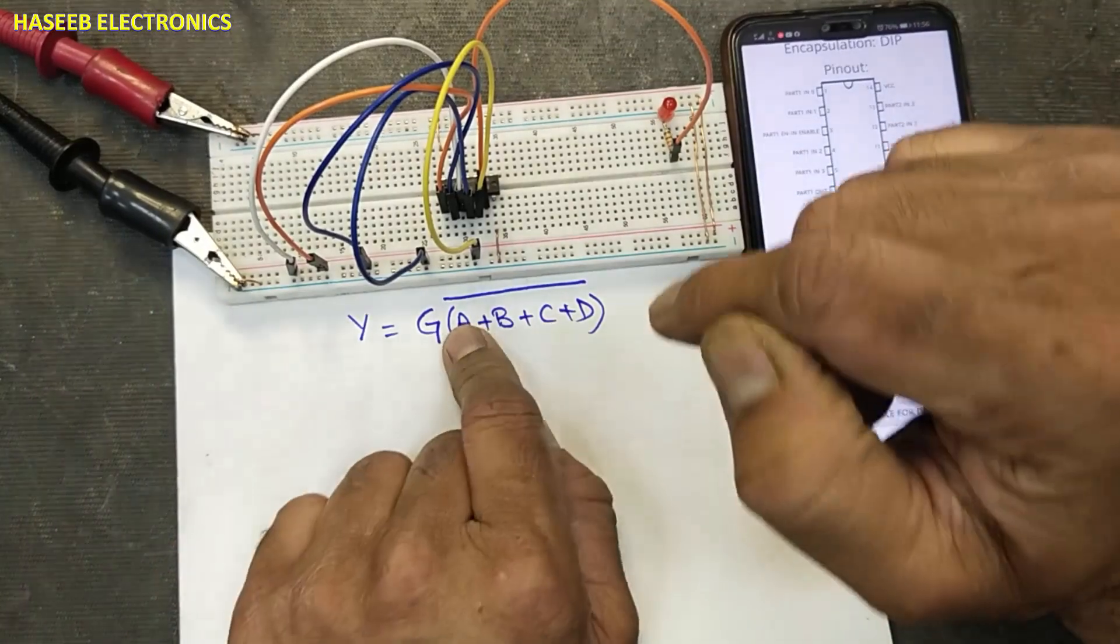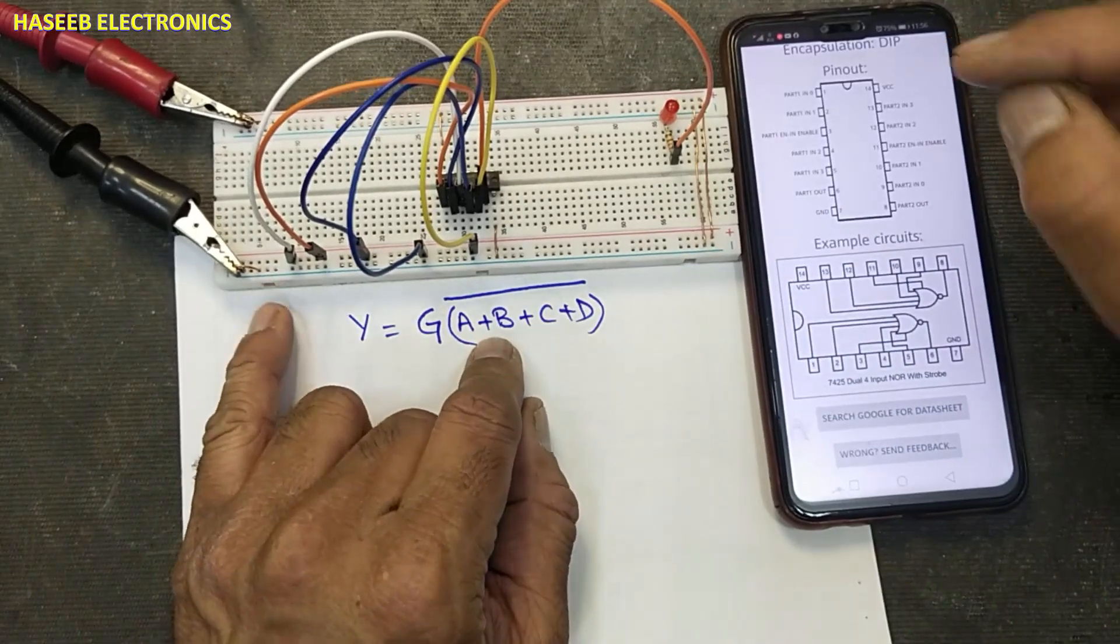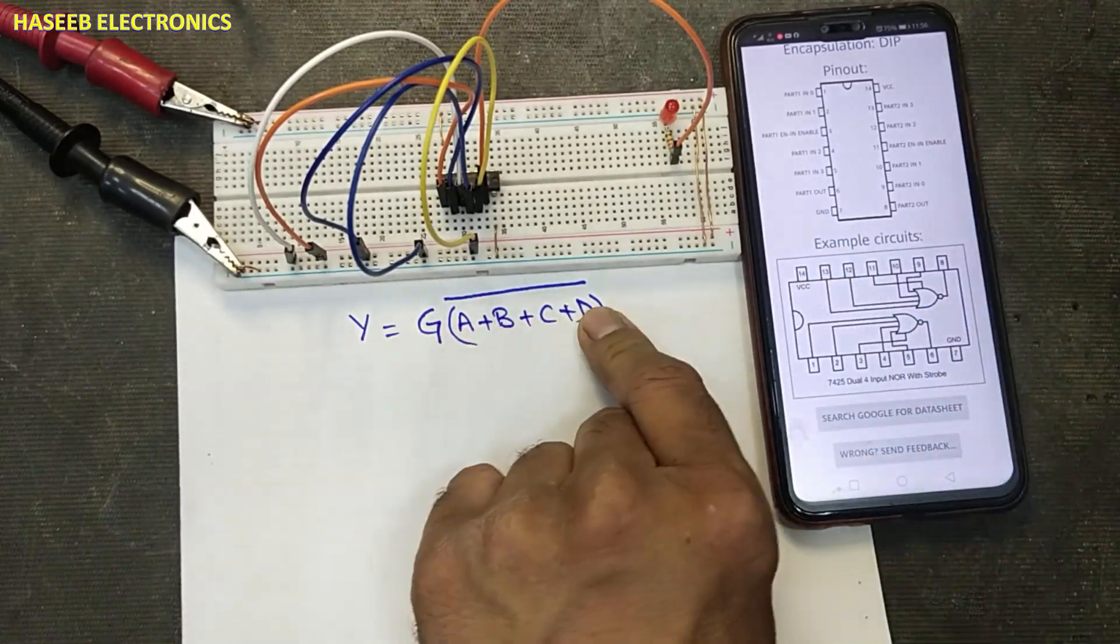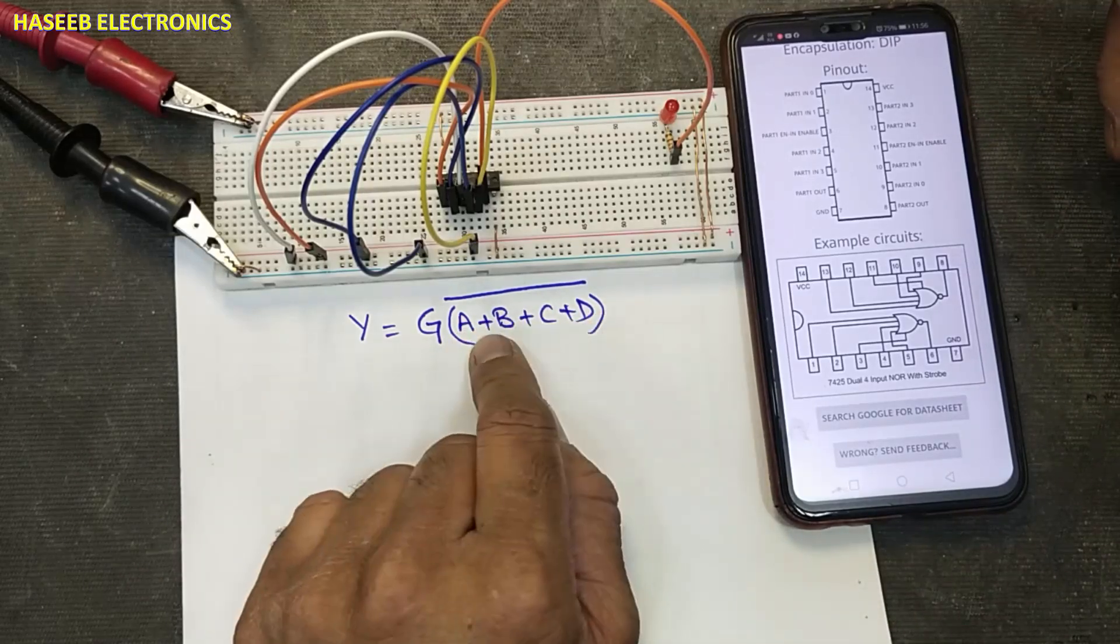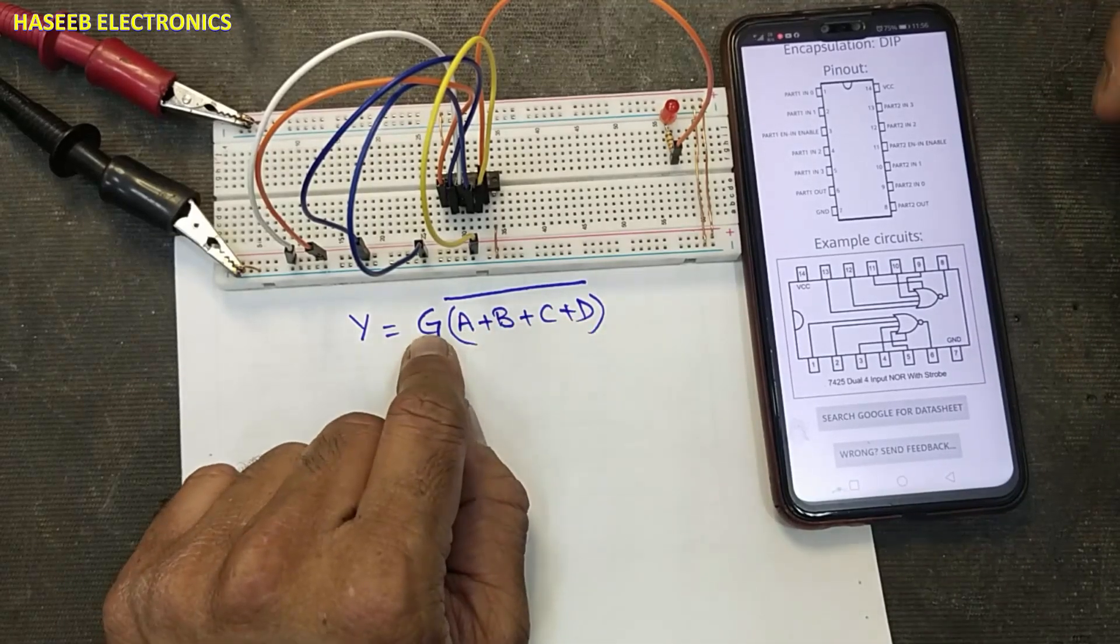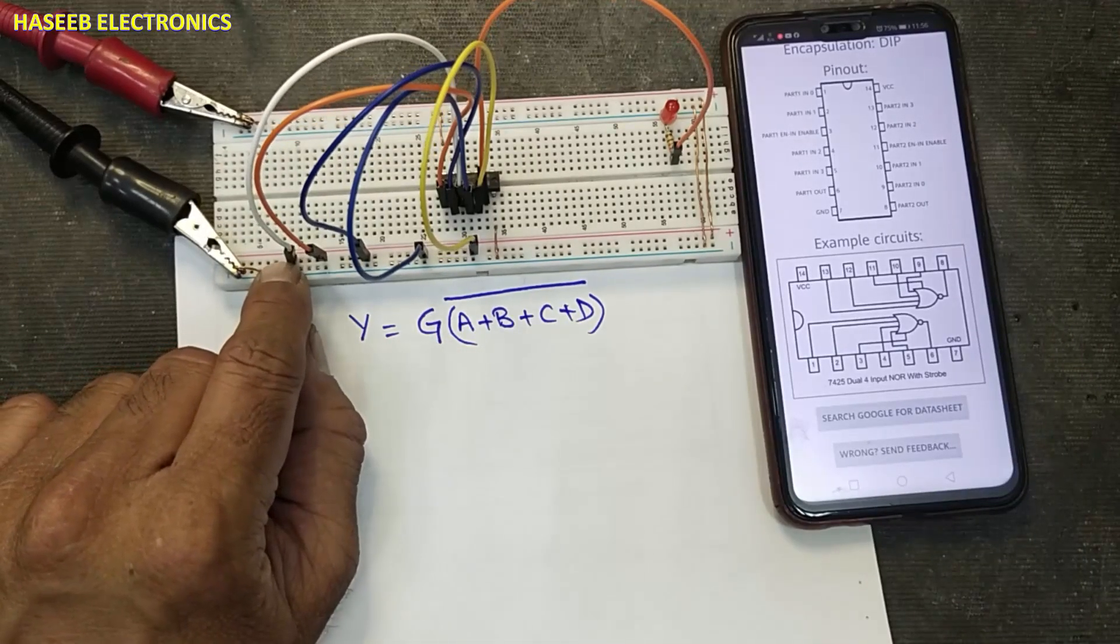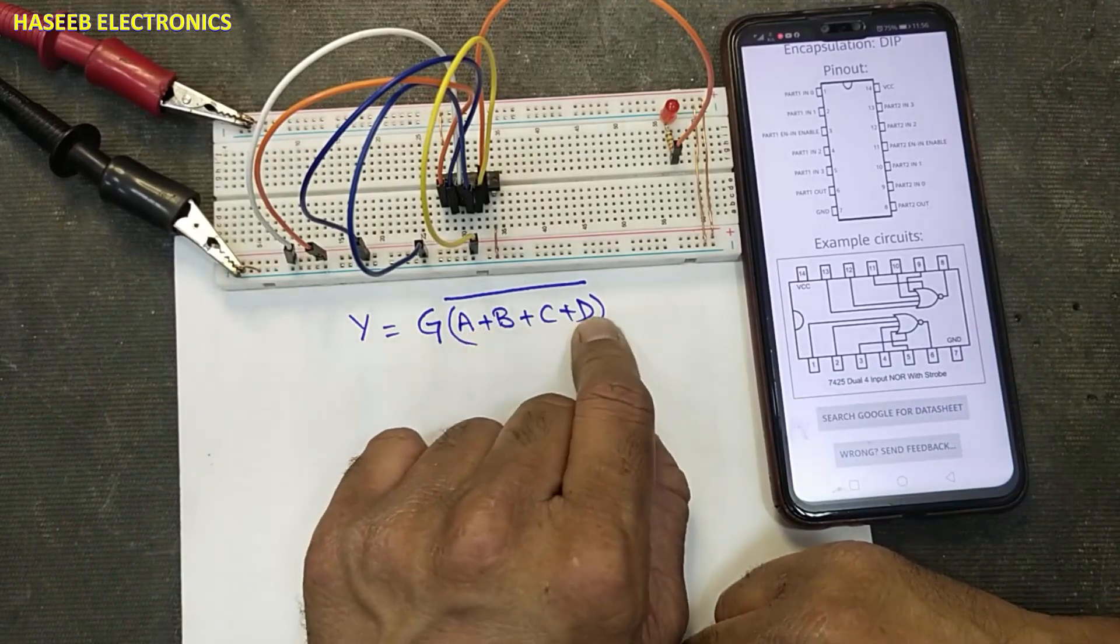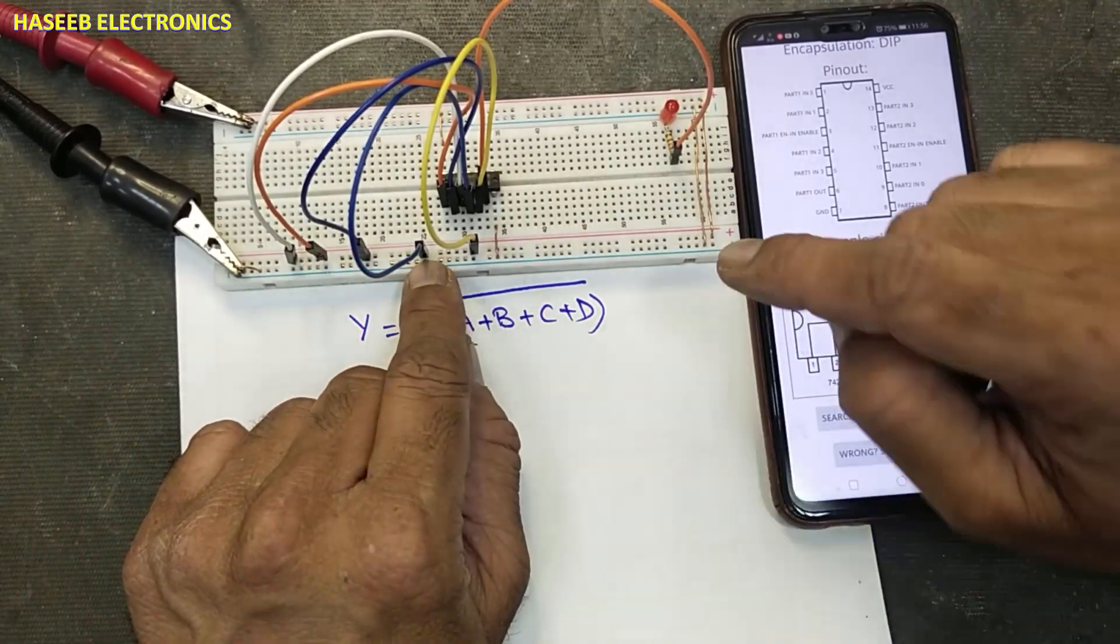In NOR gate, it is opposite. In NOR gate, when all inputs are low, the output will high because bar. Output is barred and conditioned with G. That means G must high. Then it will start functioning. When all inputs will high, output will low.